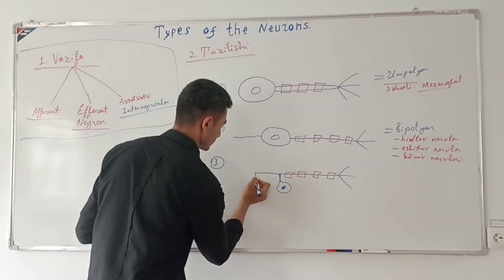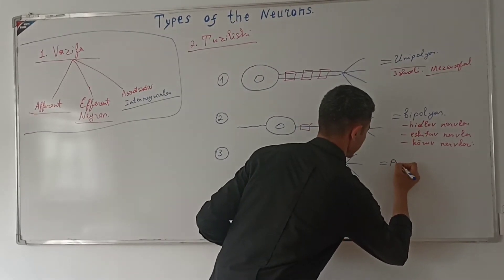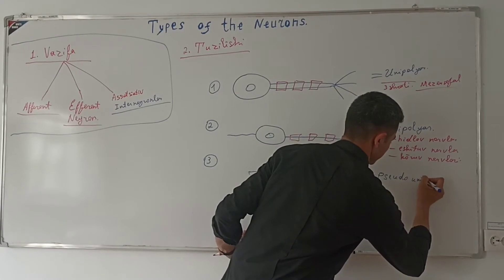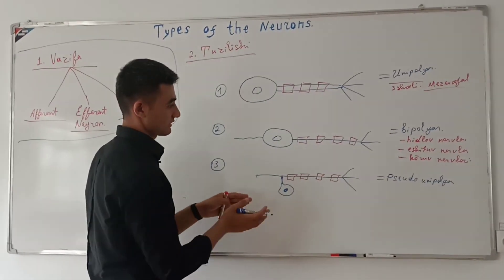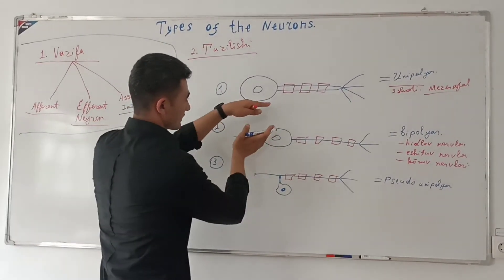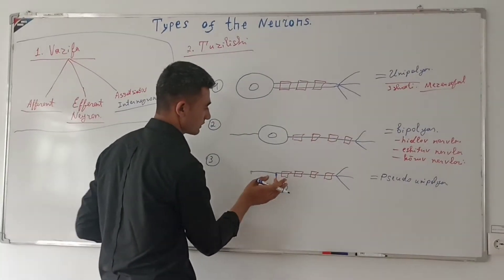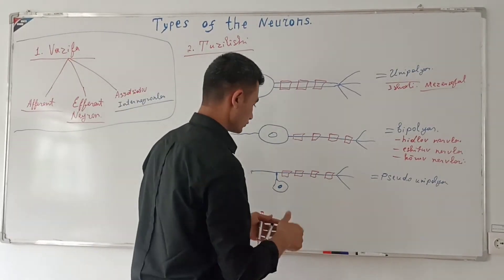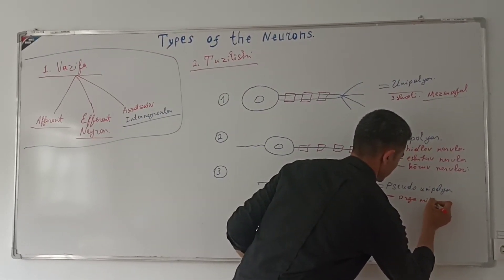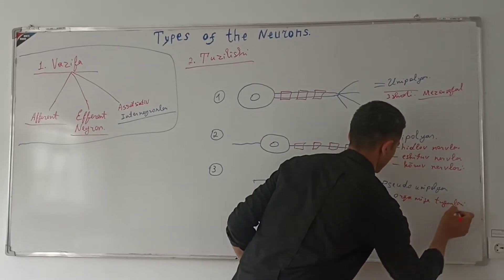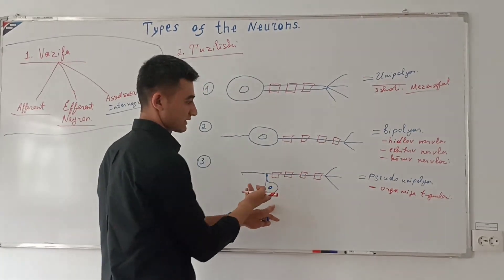Bu pseudo-unipolar neyron deb ataladi. Ba'zi neyronlar pseudo-unipolar neyronlar sifatida ham tasniflanishi mumkin. Bu pseudo-unipolar neyronlar akson va dendritlarga ega bo'lib, ular lokalizatsiya bo'yicha tasniflanadi.